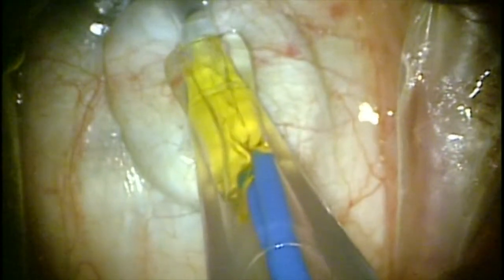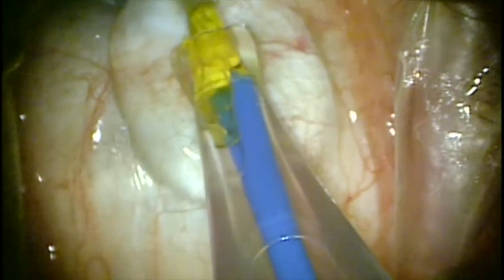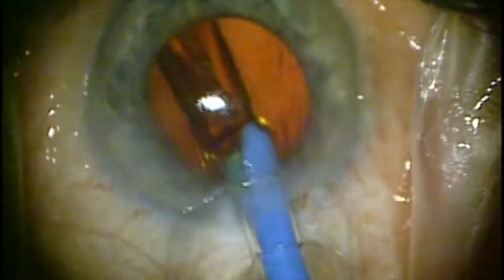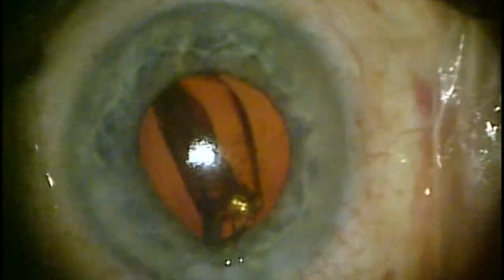If you do find yourself in the situation where the leading haptic is straight, Alcon recommends that you rotate the device clockwise, advance the lens until the haptic is completely outside of the cartridge. Once the tip of the optic starts to come out of the cartridge, rotate the device counterclockwise to exactly its initial starting position and then advance the lens until it's inside of the eye.